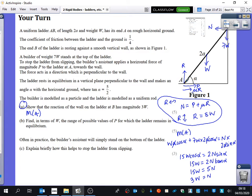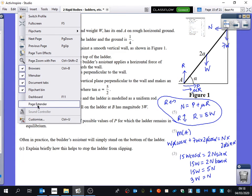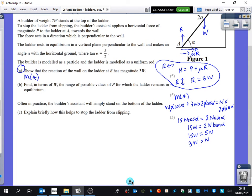And we're looking for the range of values, which means we're interested in what is the smallest amount that they can push and what is the biggest amount that they can push. Well, the smallest amount that they can push is they're pushing just enough so that the ladder doesn't slip towards,